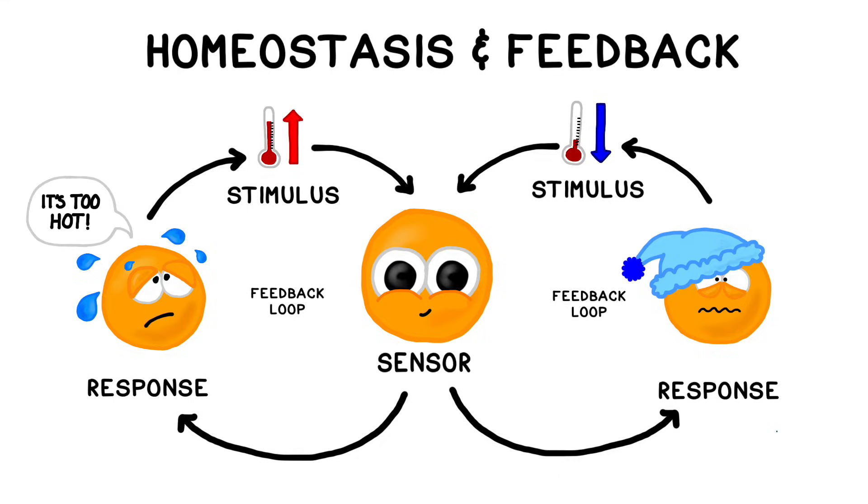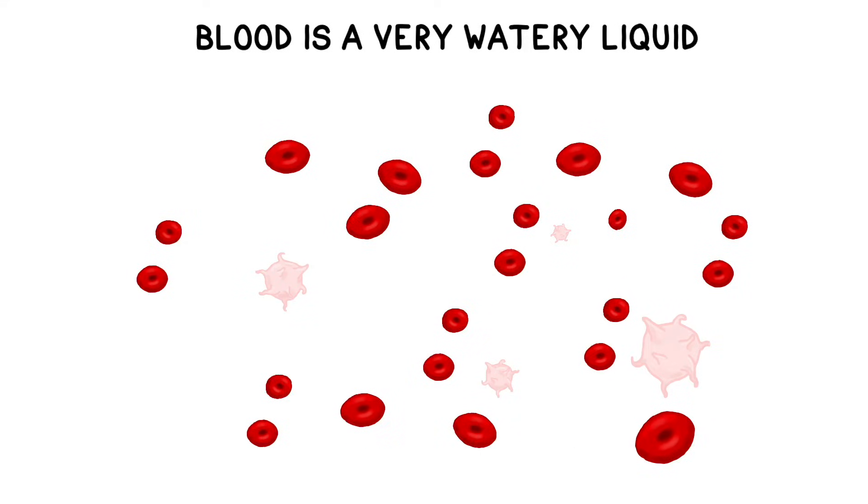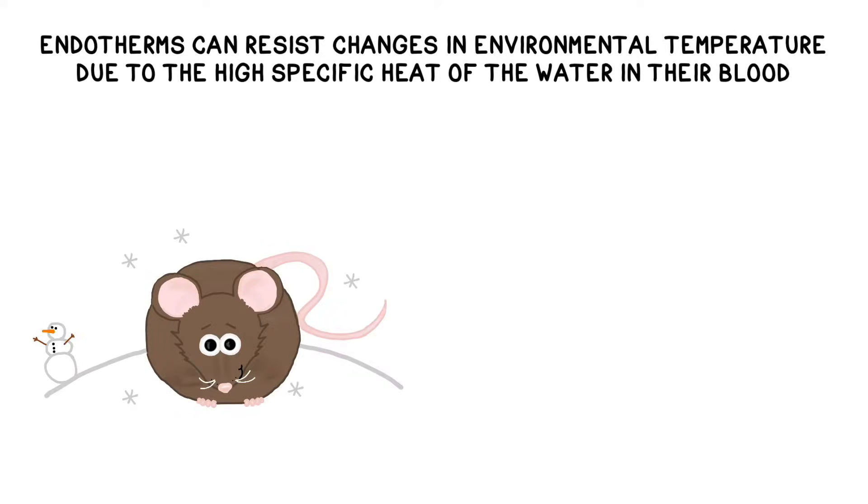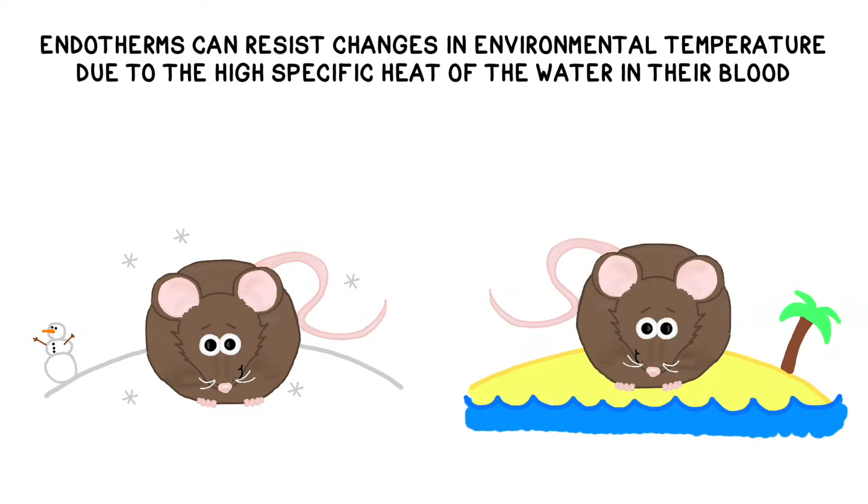Water specific heat is essential for maintaining homeostasis. Blood is a very watery liquid, so it retains many properties of water. Warm-blooded or endothermic animals use the flow of blood to more evenly distribute heat around their bodies. This is why your body temperature resists instantly crashing while playing in the snow, and resists skyrocketing when sitting on a hot beach.